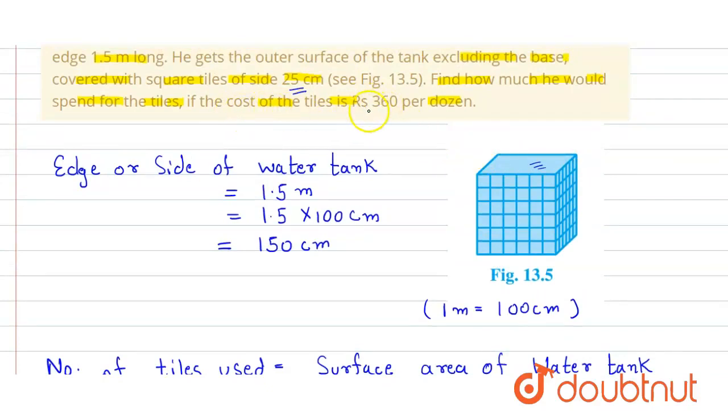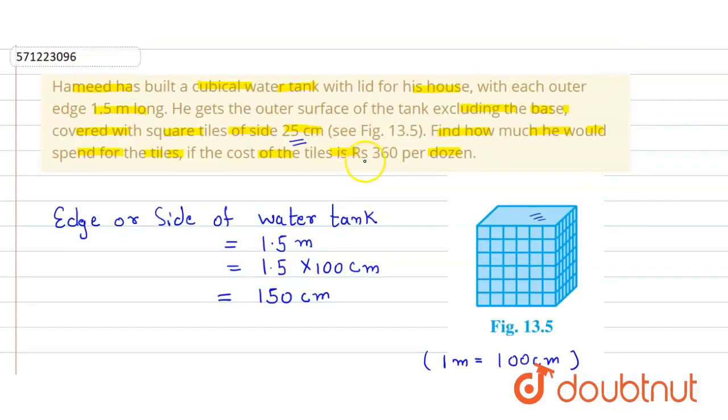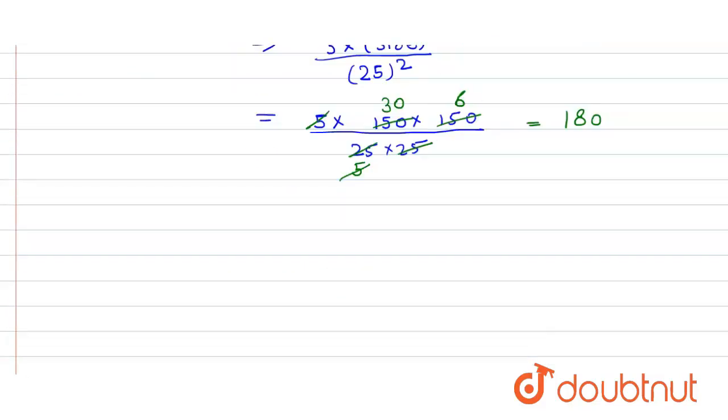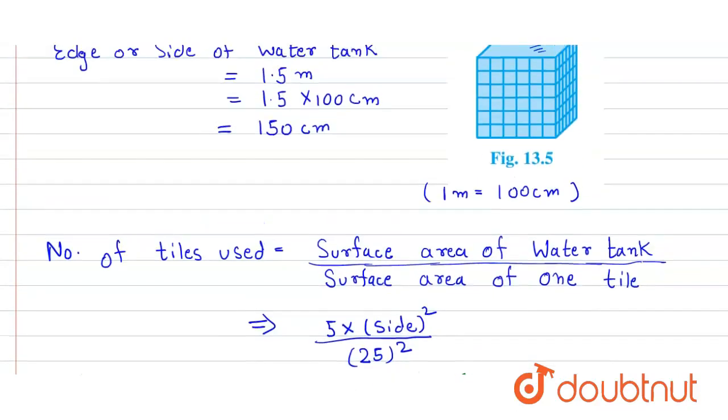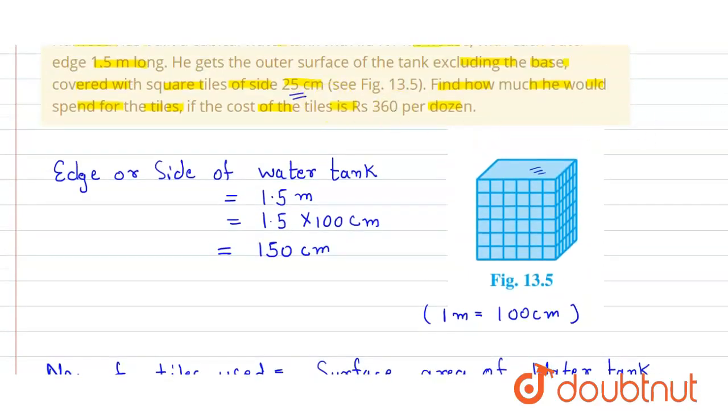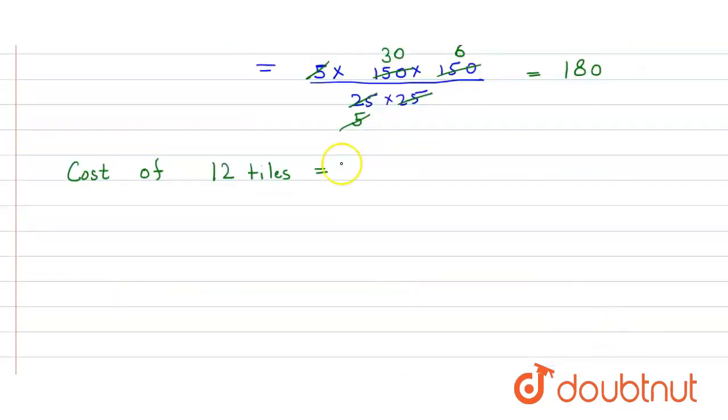So here we have to find the cost if the tiles are rupees 360 per dozen. So we know that the cost of one dozen, which equals 12 tiles, is 360 rupees.